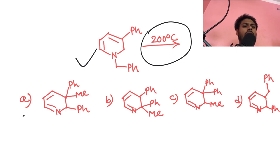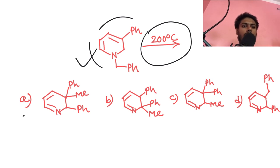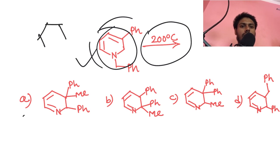Only the temperature condition is given — there is no reactant. In the starting material, you can see there is no functional group which can react. This suggests only one thing: it will undergo a pericyclic reaction. If you look at the framework of the starting material, it looks like this.